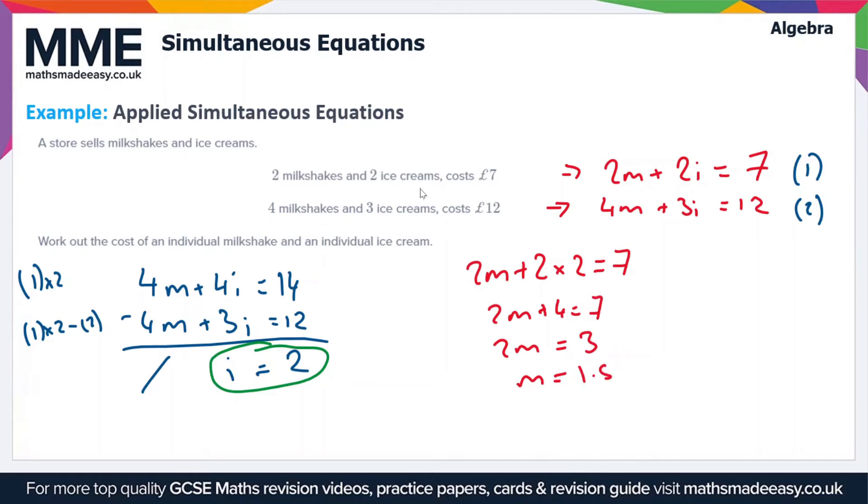Or since we're dealing with money, £1.50. So i equals 2 pounds. Ice cream is £2 and milkshake is £1.50.